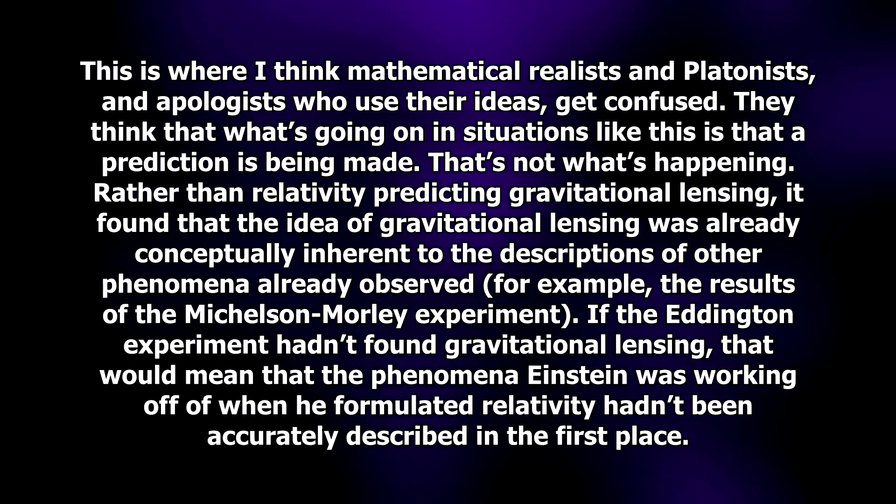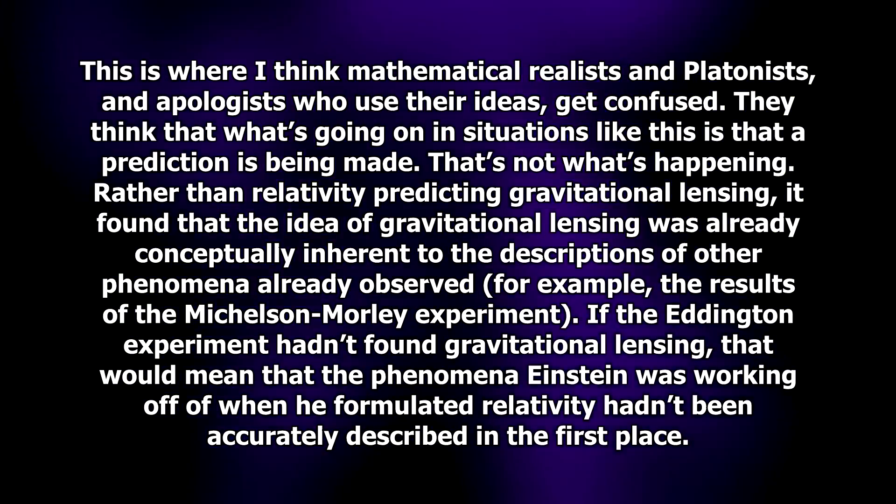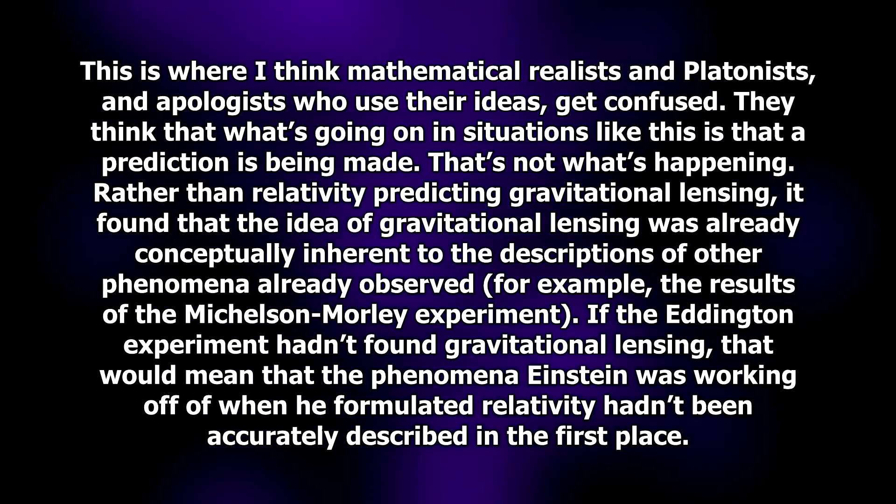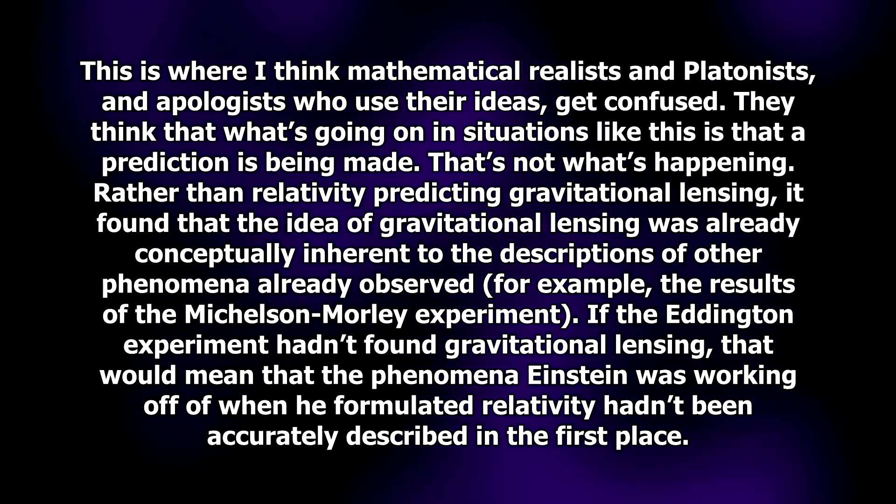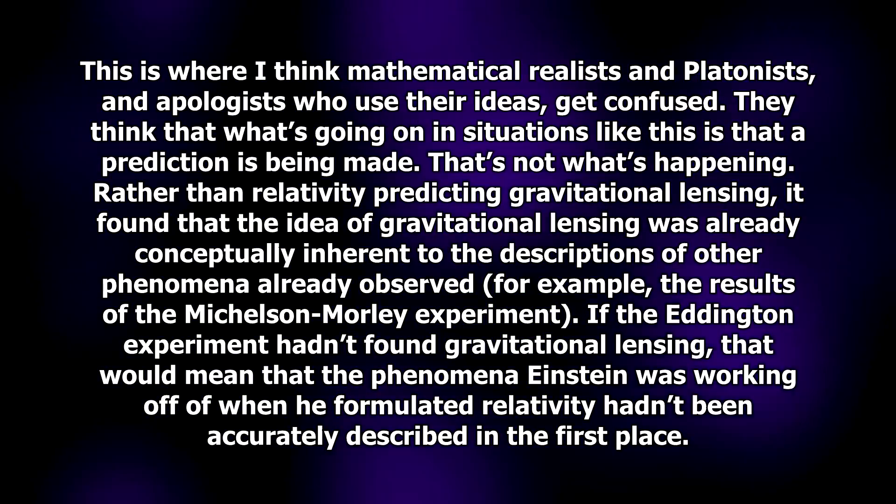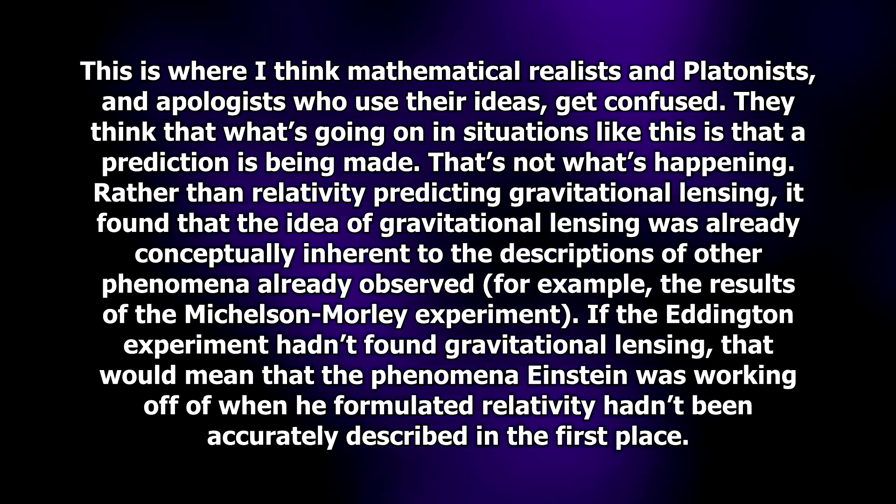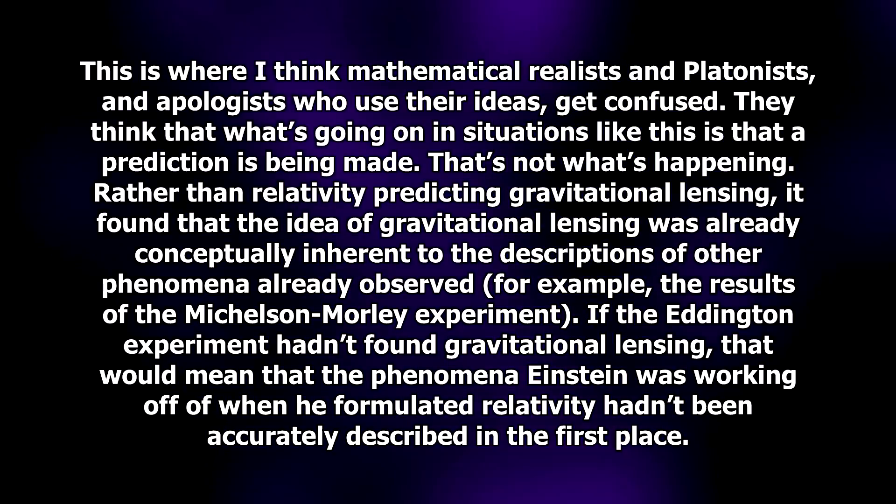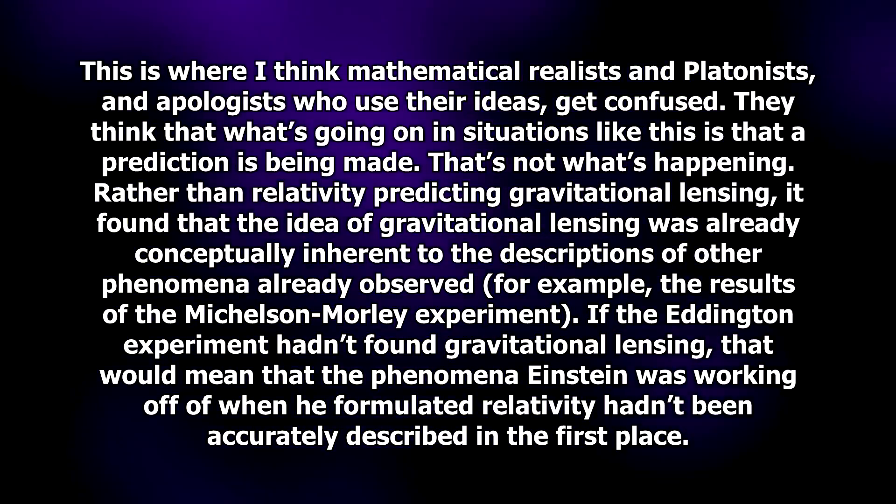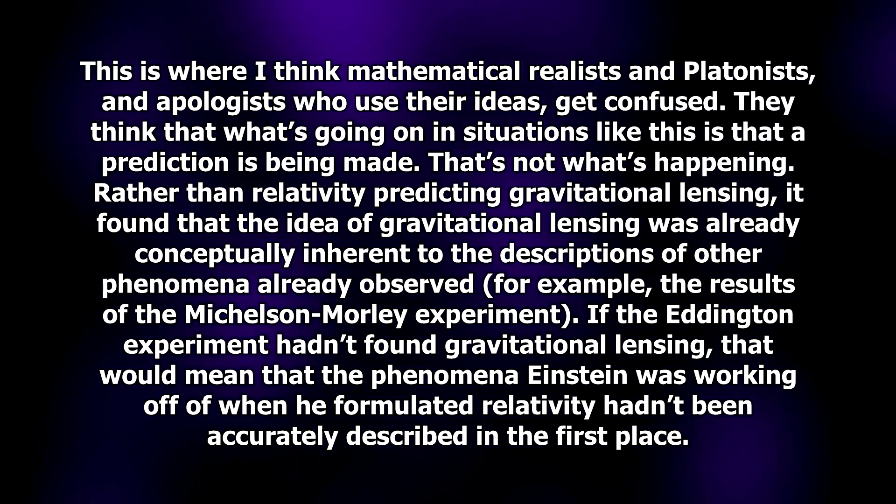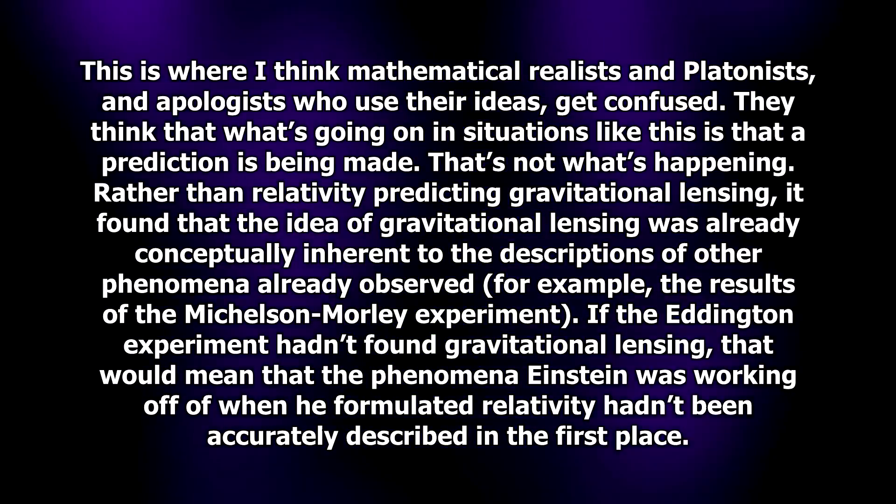That's not what's happening. Rather than relativity predicting gravitational lensing, it found that the idea of gravitational lensing was already conceptually inherent to the descriptions of other phenomena already observed, for example, the results of the Michelson-Morley experiment. If the Eddington experiment hadn't found gravitational lensing, that would mean that the phenomena Einstein was working off of when he formulated relativity hadn't been accurately described in the first place.